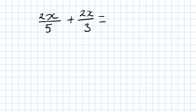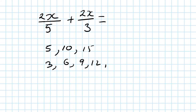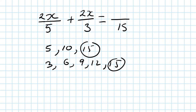Now 2x over 5 plus 2x over 3 — again we need to look for the common denominator, which is the lowest common multiple of 5 and 3. That is 15. If you're not sure: multiples of 5 are 5, 10, 15; multiples of 3 are 3, 6, 9, 12, 15 — so 15 is the common multiple. Write 15 as the denominator first.